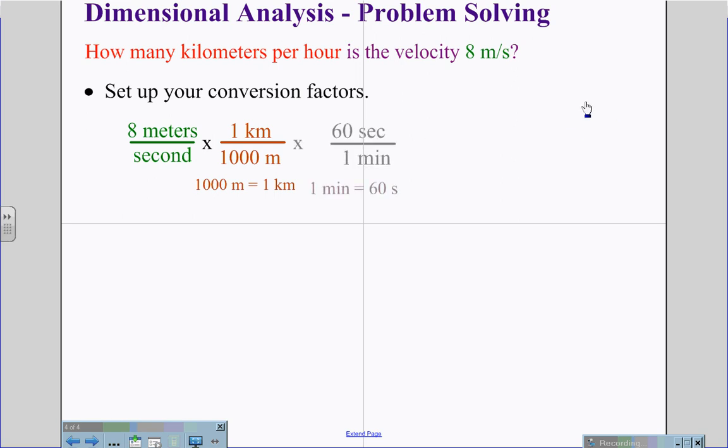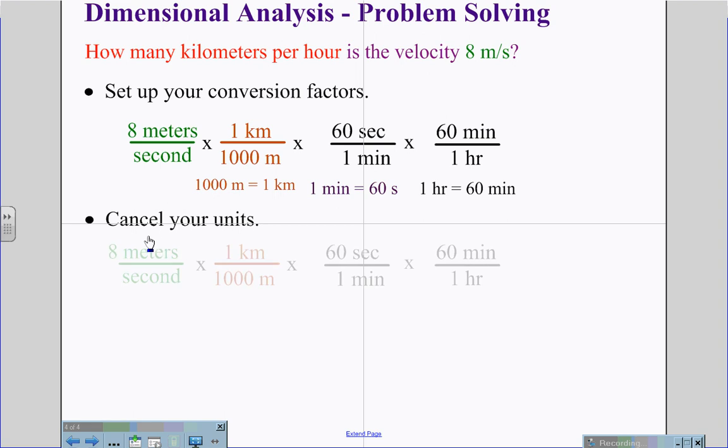In order to change the time, we need to change seconds to minutes. There are 60 seconds in one minute. And then we are going to change minutes to hours. Note here that because seconds is in the denominator, we must cancel with seconds in the numerator. And with minutes in the denominator, we must cancel with minutes in the numerator. So we will end up with hours in the denominator. We will now be able to cancel our units.